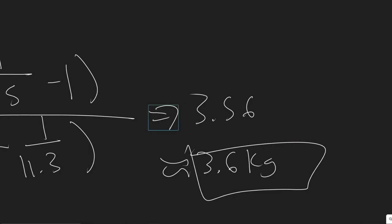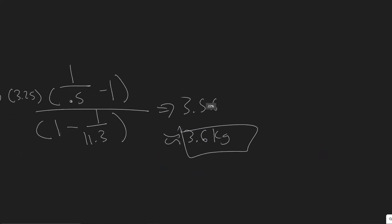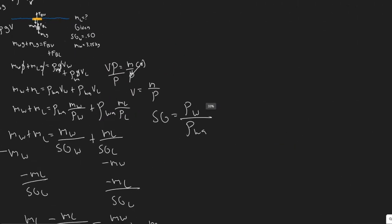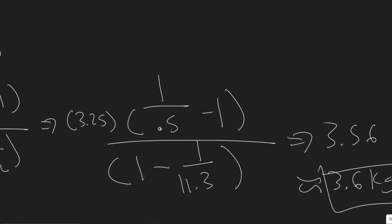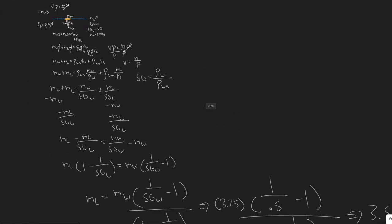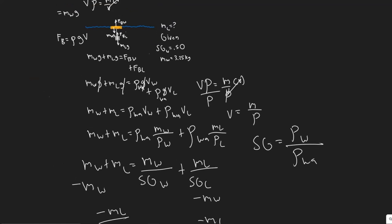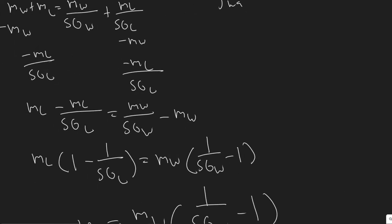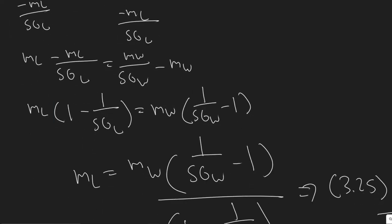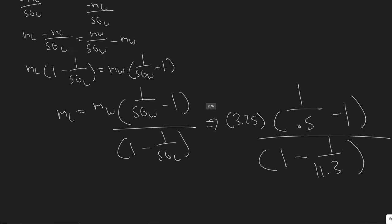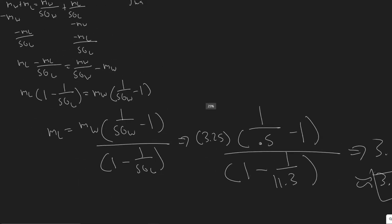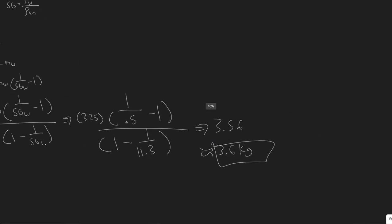We set the buoyancy forces equal to the weight forces because at that point the system is at the threshold — any less mass and the buoyancy force is greater, so it floats. That's why setting them equal gives us the minimum value. To recap: we set them equal to each other, then manipulated the equation to isolate M_L in terms of values we know. So 3.6 kilograms is your answer, and hopefully you found this video useful.